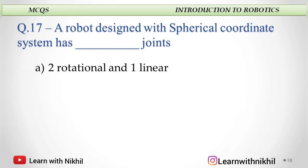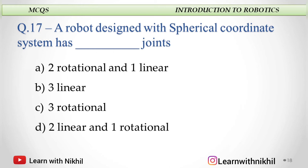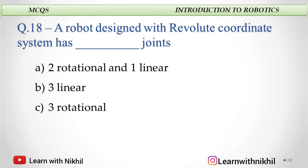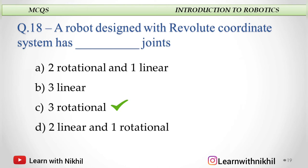Next: A robot designed with a spherical coordinate system has dash joints — two rotational one linear, three linear, three rotational, or two linear and one rotational? The answer is two rotational and one linear. A robot designed with a revolute coordinate system — same options — and the answer is three rotational.